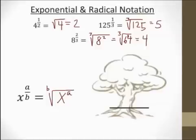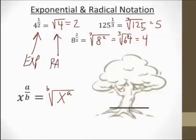So you can remember it this way. This is kind of a little trick to remember how this works. This is called exponential notation. So if I write 4 to the 1 half power, that's exponential notation. And if I write square root of 4, that's radical notation.